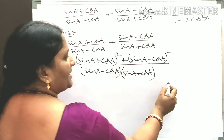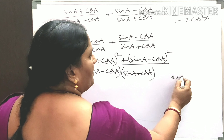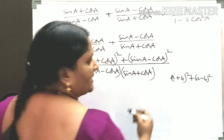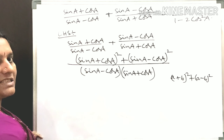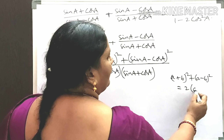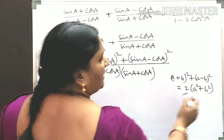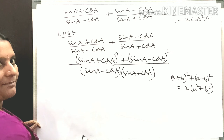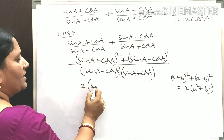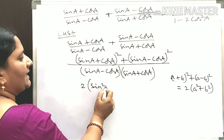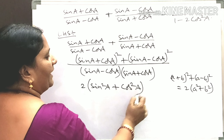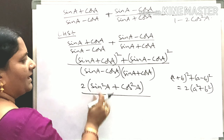So the numerator is in the form of (A + B)² + (A - B)². Using the algebra formula, (A + B)² + (A - B)² = 2(A² + B²). Applying that formula to the numerator, we get 2(sin²A + cos²A).